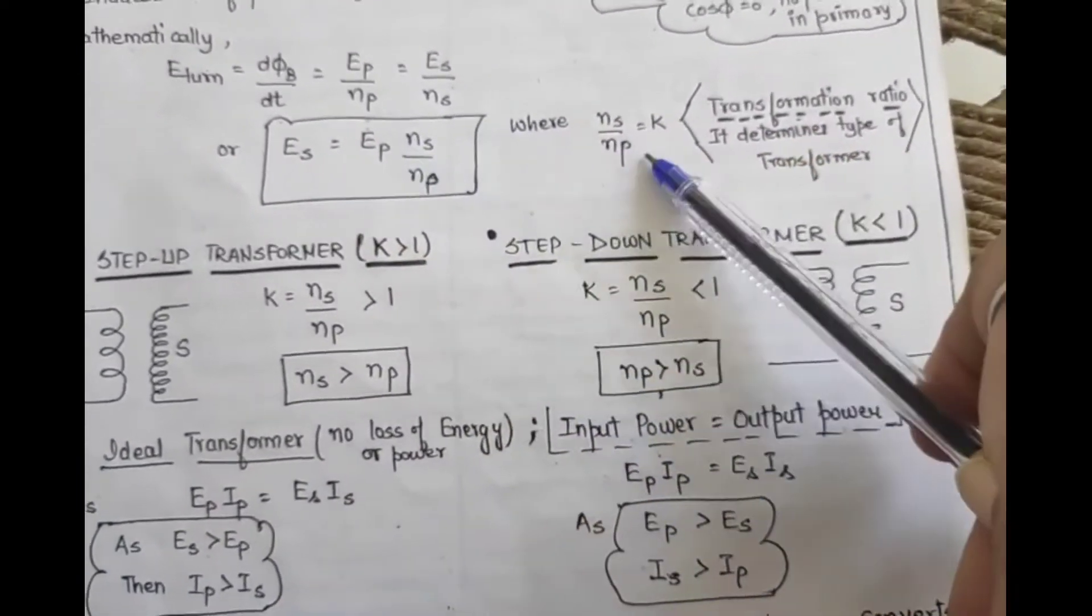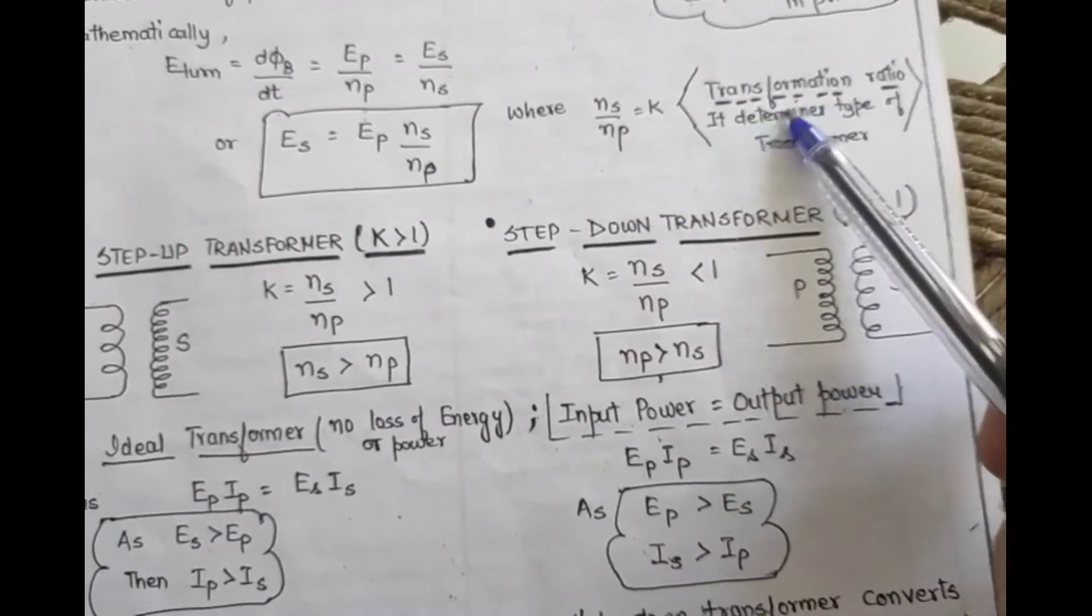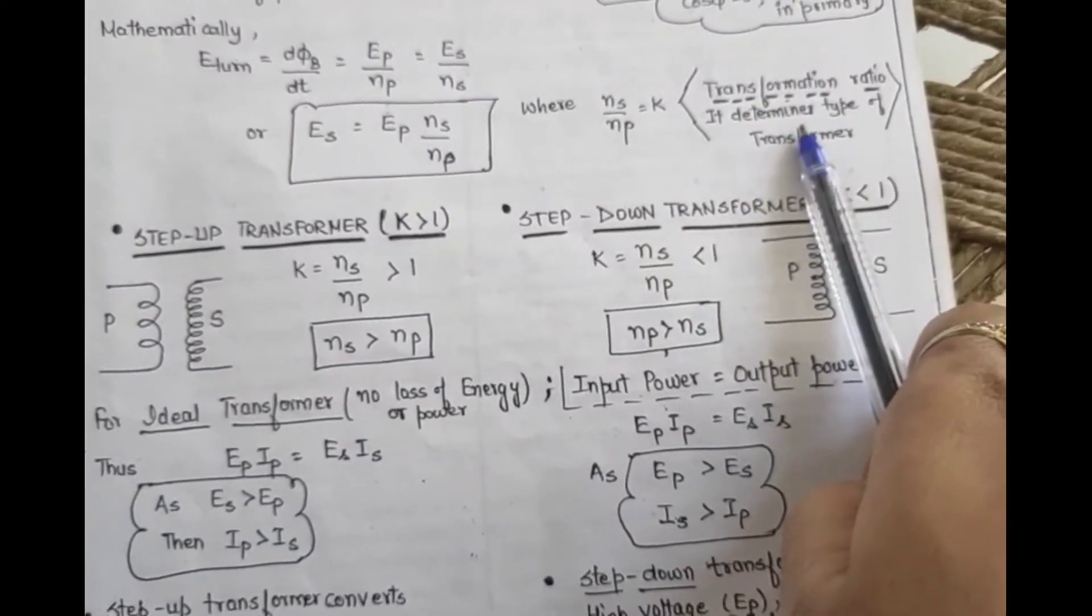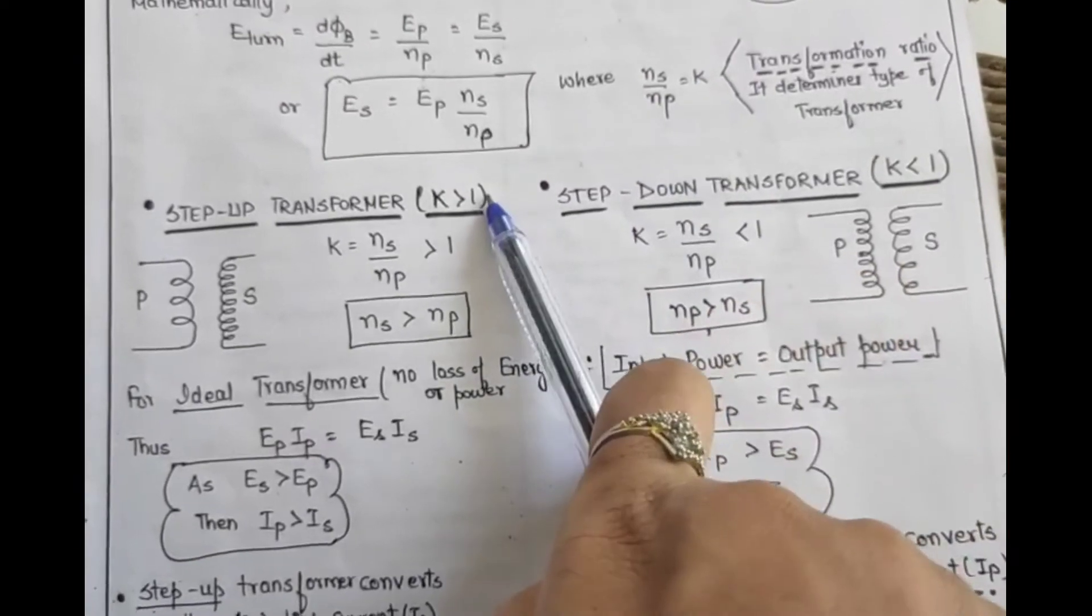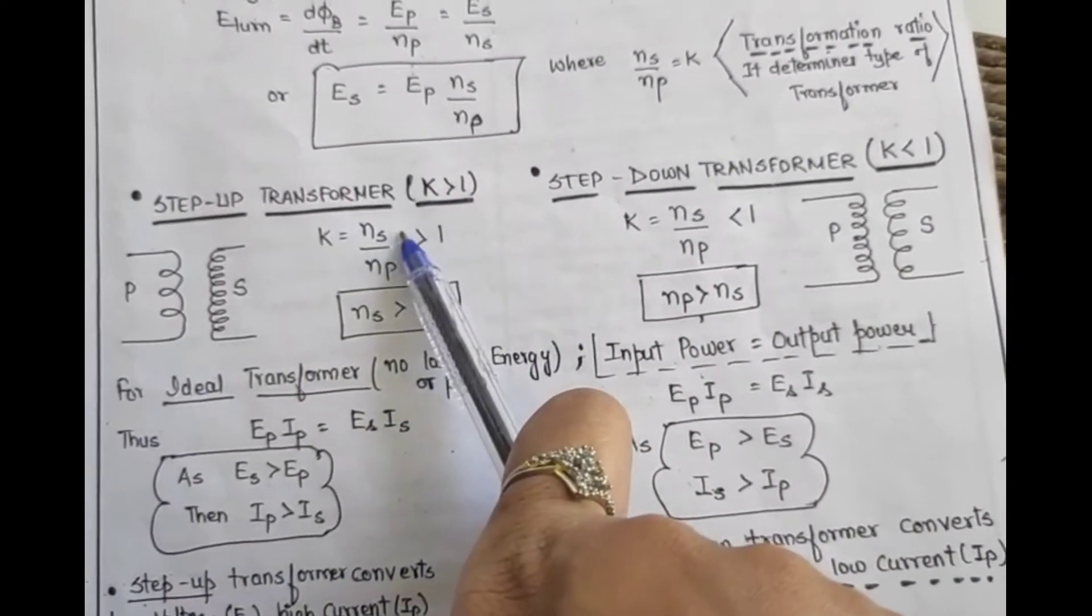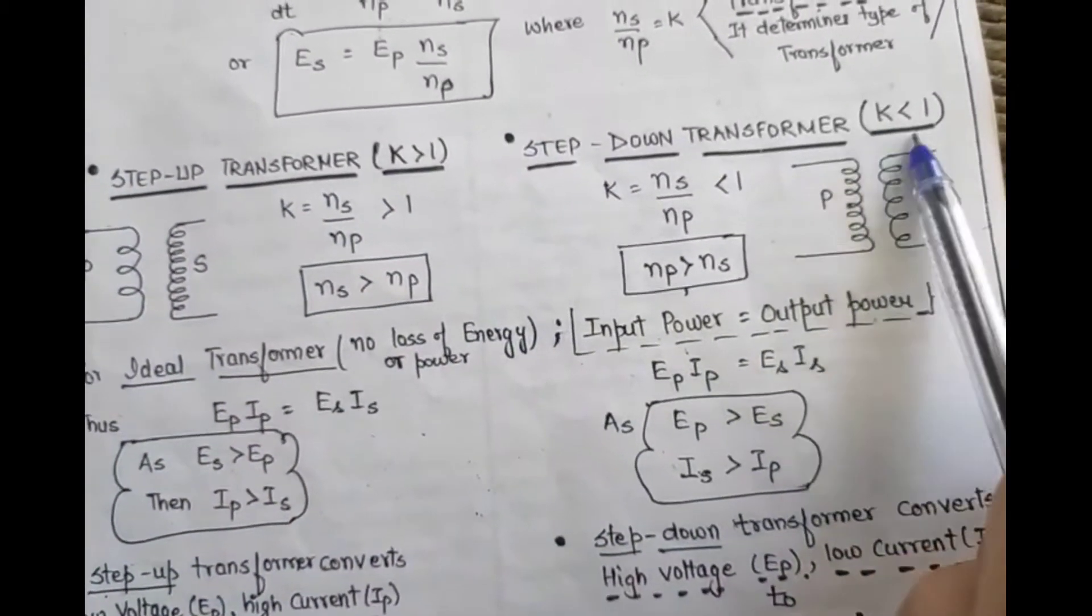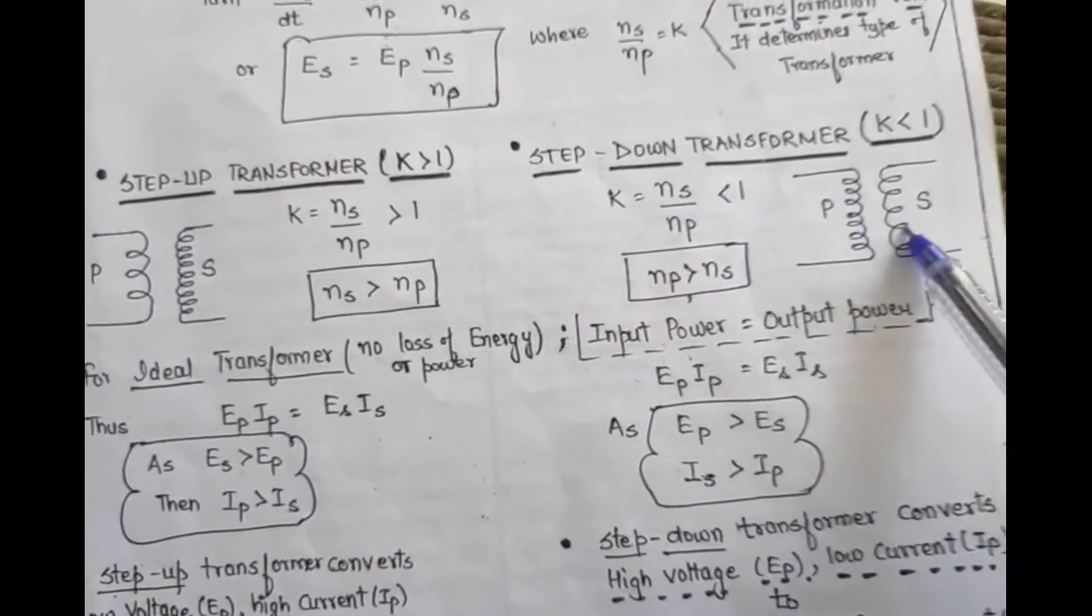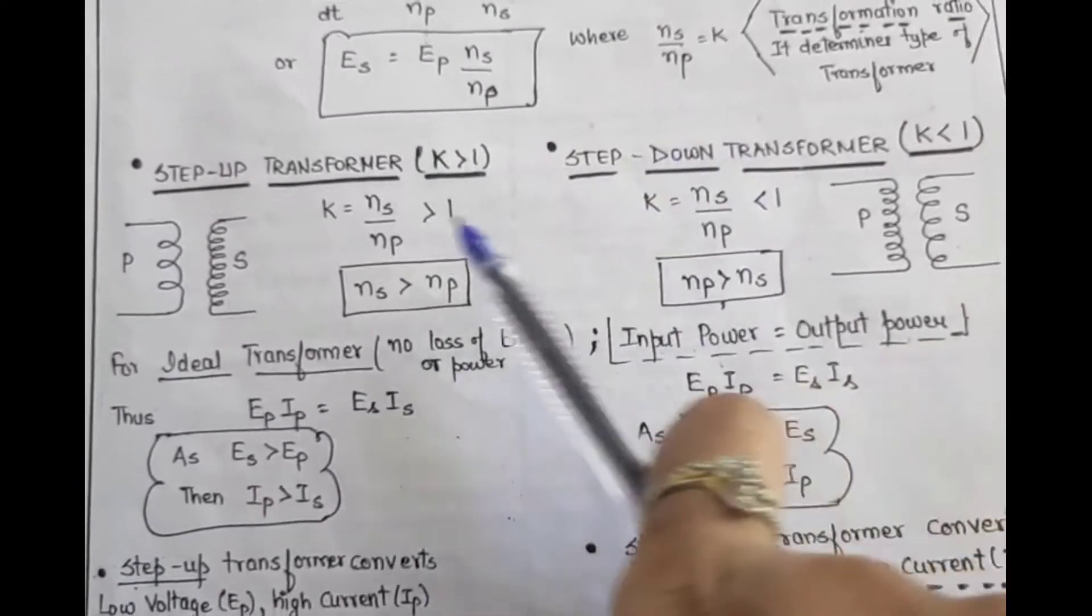And conceptually, NS/NP I have denoted by K and given it a proper name. What is the name? Transformation ratio. This will be used to identify the type of transformer. If the value of K is greater than 1, then NS is greater than NP, meaning secondary has more turns, then what kind of transformer is it? Step-up. If K is less than 1, look at the figure, then which has fewer turns? Secondary will have fewer turns, so therefore we will call it step-down transformer.